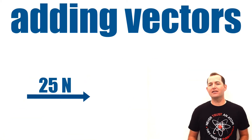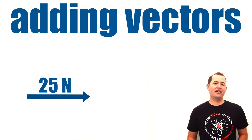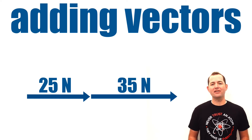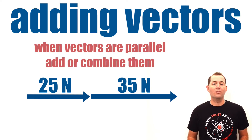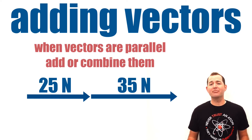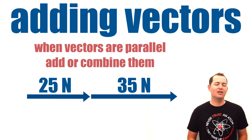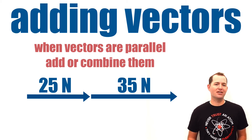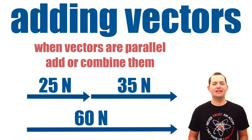We may want to add that vector to another vector that is 35 newtons to the right. When vectors are parallel to each other, we can simply combine them. So 25 newtons to the right plus 35 newtons to the right is equal to 60 newtons to the right.